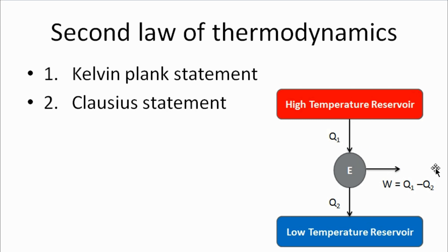As this diagram shows, a heat engine explains the Kelvin-Planck statement, in which heat Q1 from the high temperature reservoir is given to a heat engine which produces W amount of work, and Q2 amount of heat is given to the low temperature reservoir. The amount of work produced is equal to Q1 minus Q2.